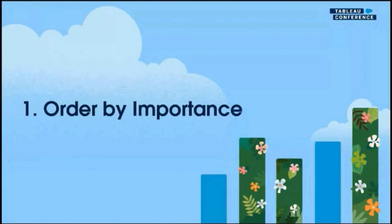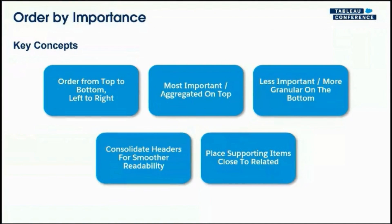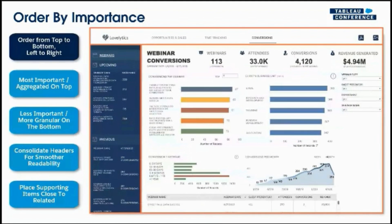Number one: order by importance. Key concepts include ordering from top to bottom and left to right, keeping your most important or aggregated information on top and less important, more granular information on the bottom, consolidating headers for smoother readability, and placing supporting items close to related content. Within the dashboard, we have our logo in the top left, navigation and download objects across the top, a side panel for filters or supporting information, and the bulk of the dashboard in the center. We want to think about ordering from most important to least important.